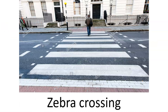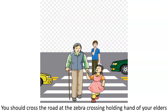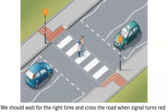This is zebra crossing. Zebra crossings are marked with black and white stripes on the road. These markings warn the driver that there may be pedestrians crossing and also to give way for them. Children, you should cross the road at the zebra crossing holding hands of your elders.